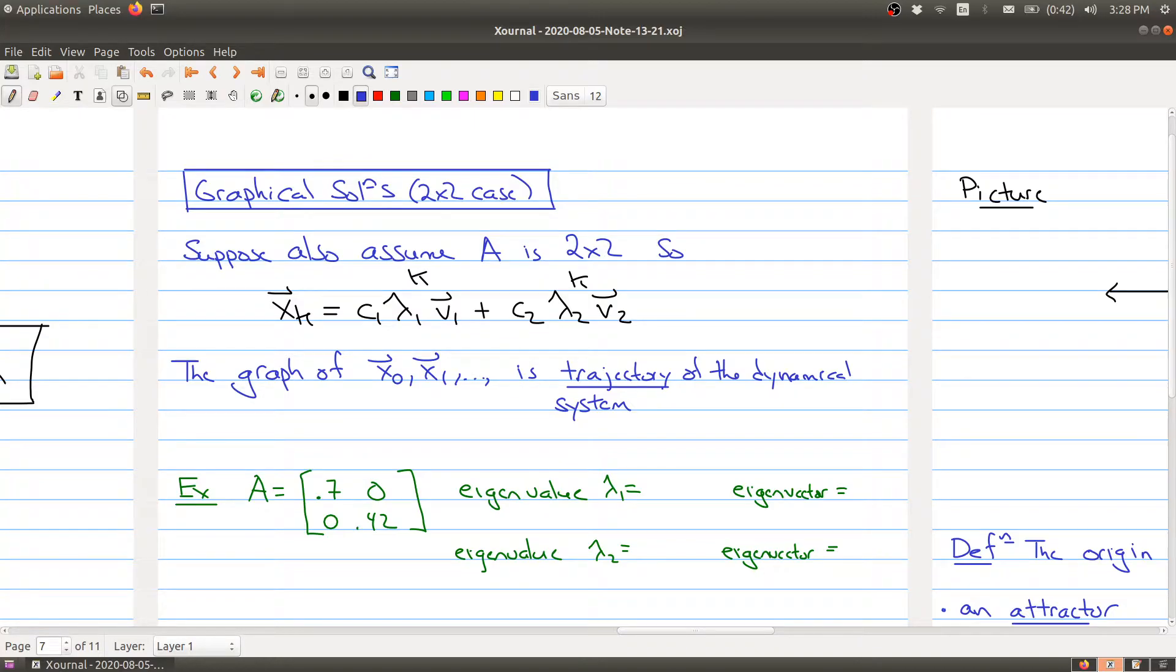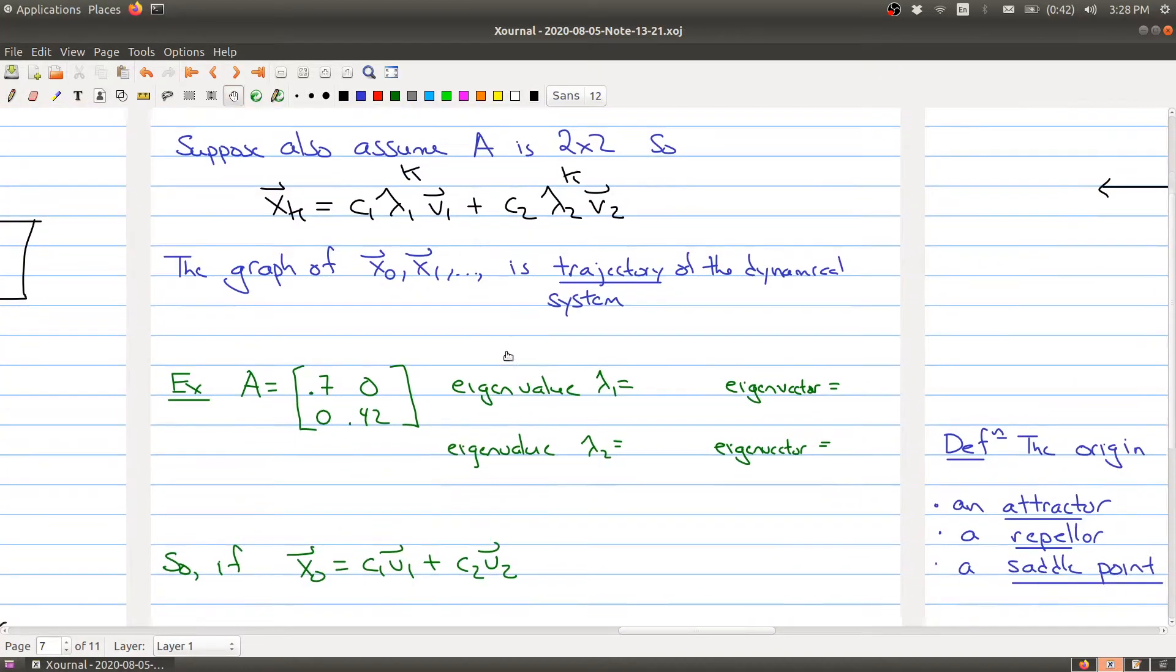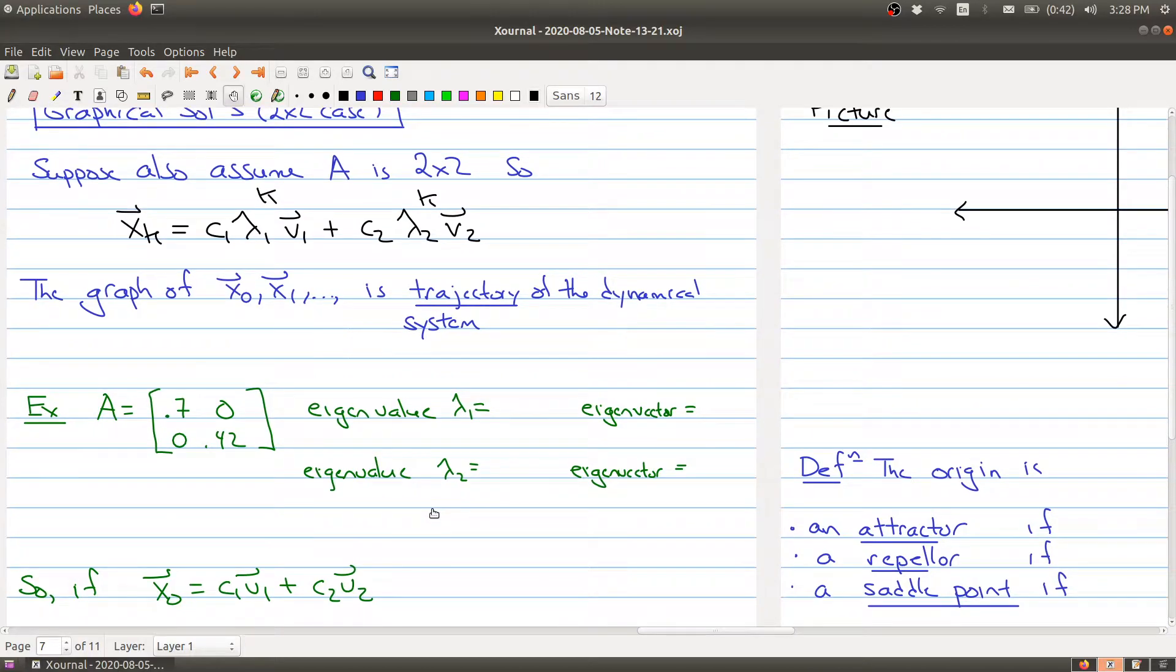So let me give you an example of what's going on here. So here I have a matrix A and you should almost be able to do this just by sight now. It's a diagonal matrix itself, so it is diagonalizable. And its eigenvalues are 0.7 and 0.42. And its first eigenvector is [1, 0] and the second vector is [0, 1].